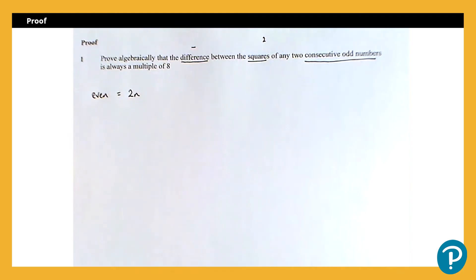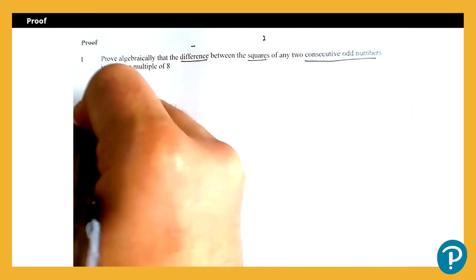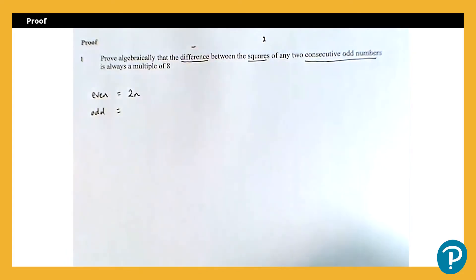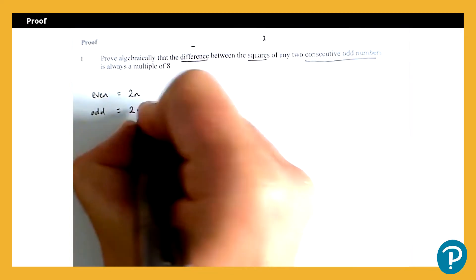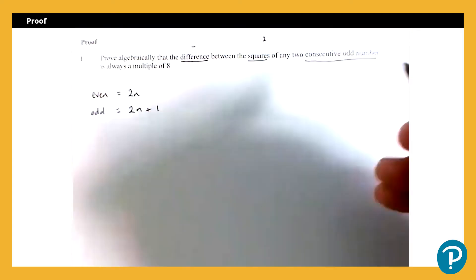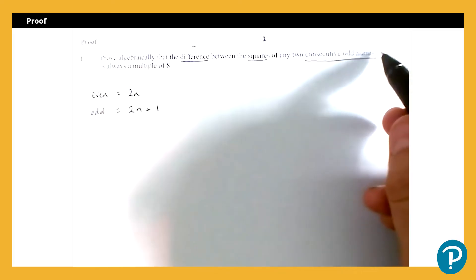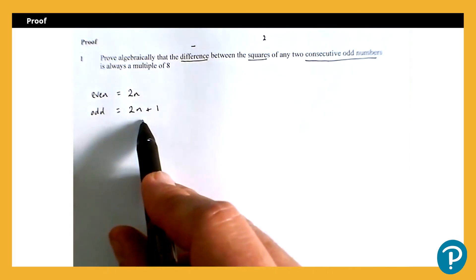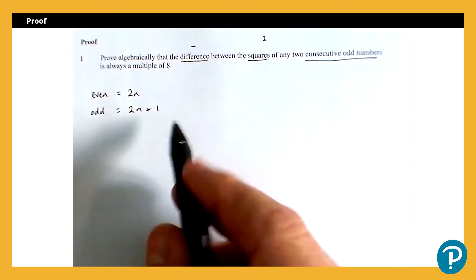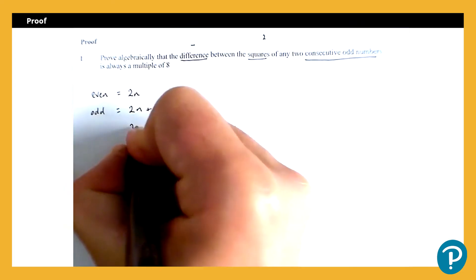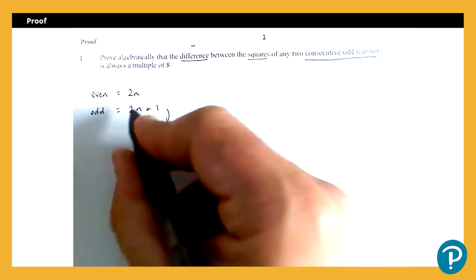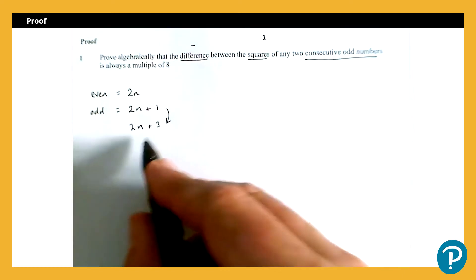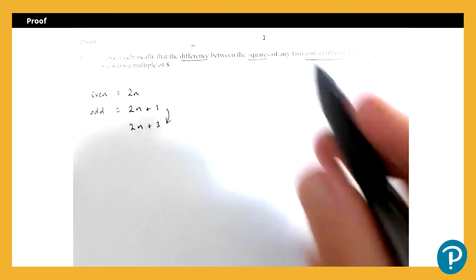So every even number can be written in that form. For example, the number 10 is 2n where n is equal to 5. Now an odd number is always either one more or one less than an even number. So a general form for an odd number is 2n plus 1, or 2n minus 1 would also work. Now we want here two consecutive odd numbers. So if my first odd number is 2n plus 1, to get the next odd number I would simply add 2. So my next one will be 2n plus 3. So these are consecutive odd numbers for some value of n. We're using algebra here because we don't know what the value of n is—it could be any two consecutive odd numbers.